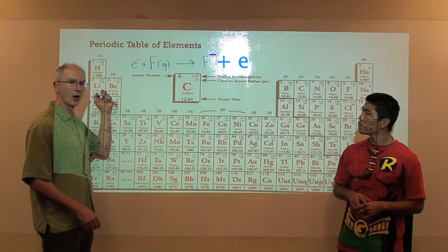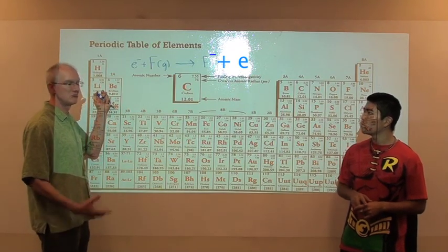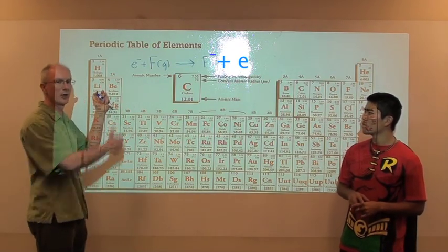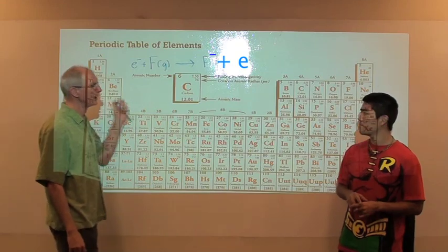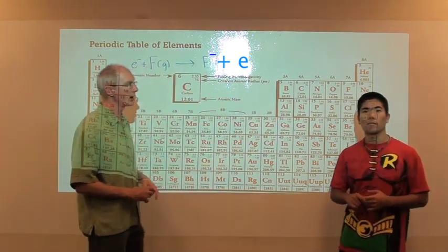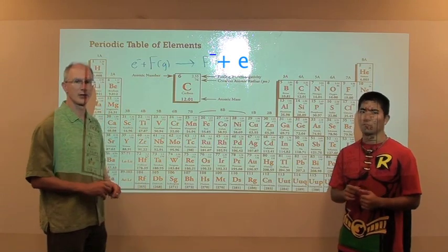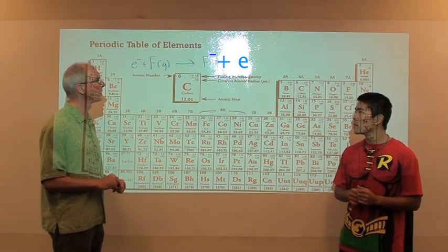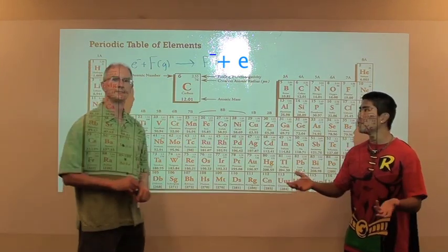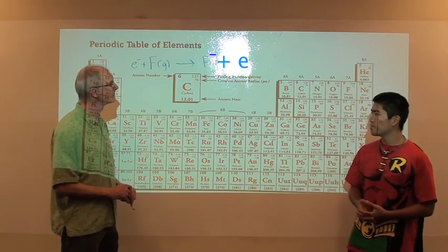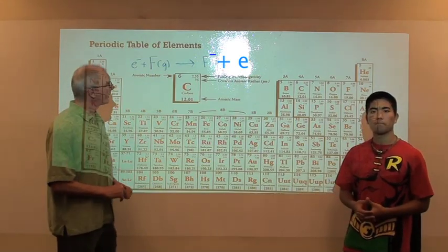Things over here with a low Z effective, not that attracted. They're not going to really want that extra electron. But things over here with high effective nuclear charge, they really want to have extra electrons. They're really attracted to extra electrons. So it's not going to take much energy to get them to take that electron.